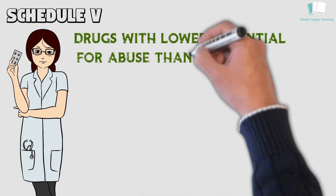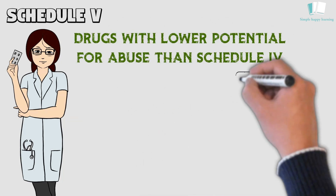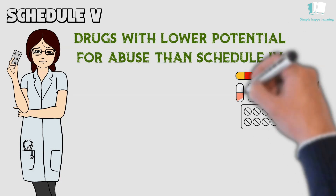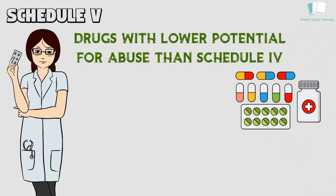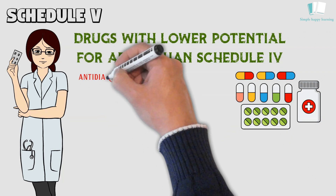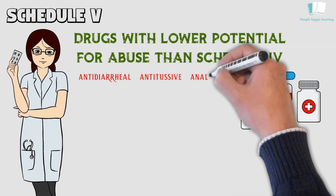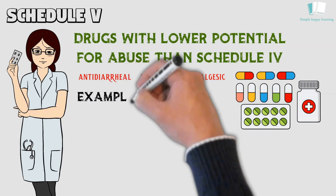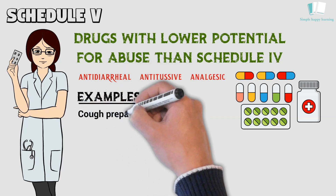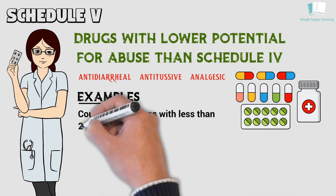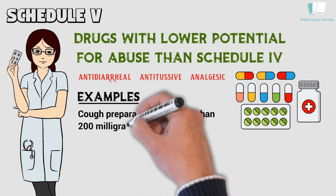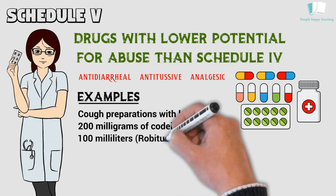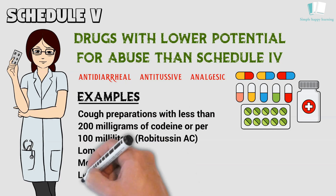Schedule 5: Schedule 5 drugs, substances, or chemicals are defined as drugs with lower potential for abuse than Schedule 4 and consist of preparations containing limited quantities of certain narcotics. Schedule 5 drugs are generally used for antidiarrheal, antitussive, and analgesic purposes. Some examples include cough preparations with less than 200 milligrams of codeine per 100 milliliters (Robitussin AC), Lomotil, Motofen, and Lyrica.